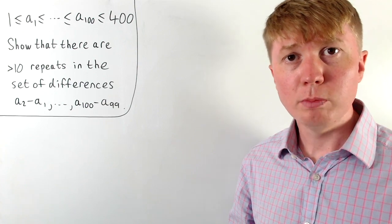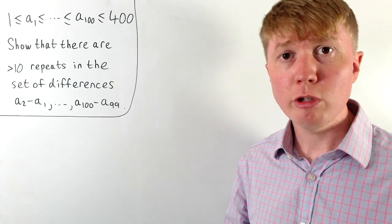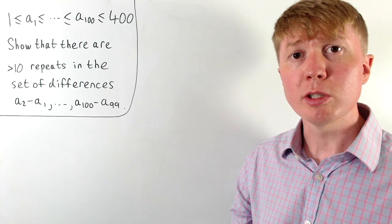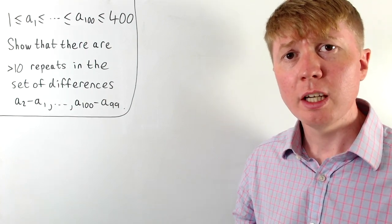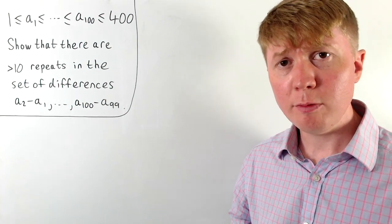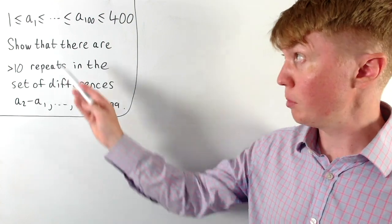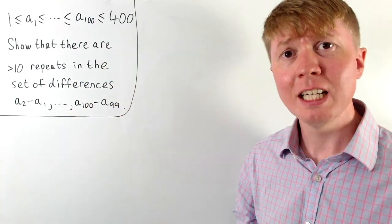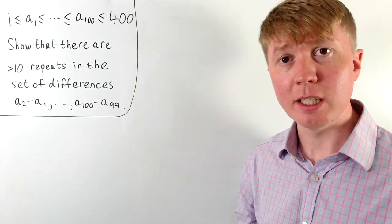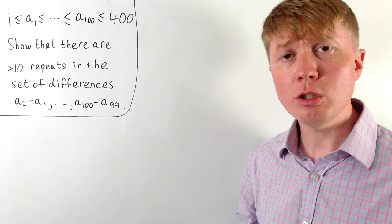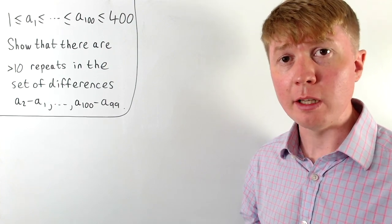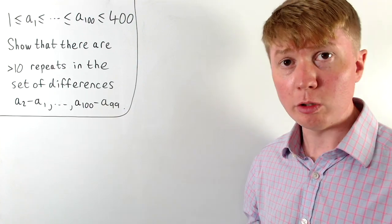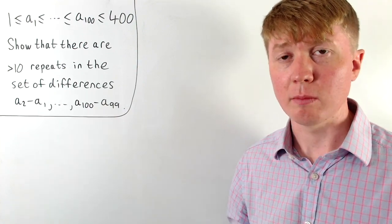We're going to solve this problem where we've got 100 integers, a1 up to a100, which are between 1 and 400. If we consider the differences between consecutive numbers in this sequence — a2 minus a1, a3 minus a2, and so on — we want to show that in this list of all the differences, there must be a value which repeats more than 10 times.